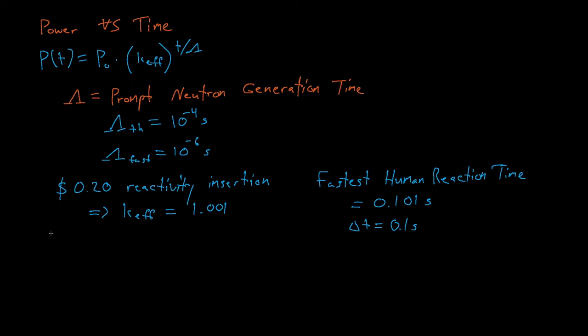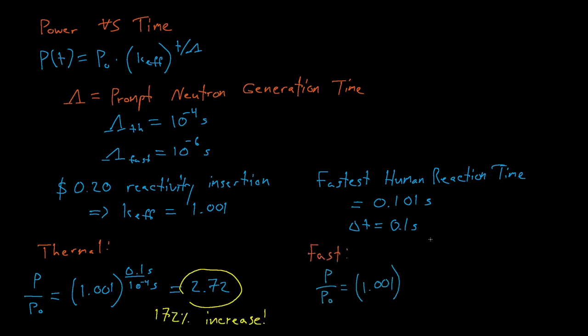So let's say that our reactor operator is the Usain Bolt of reactors, the Hungrybox, or the Michael Jordan of reactors, so they can respond actually in about 0.1 seconds. In that time, the reactor power will have increased by 172 percent for a thermal reactor, and it will have increased by a factor of 2.557 times 10 to the 43 for a fast reactor.